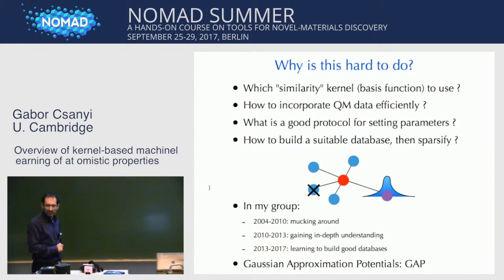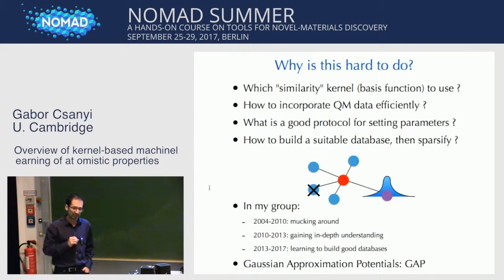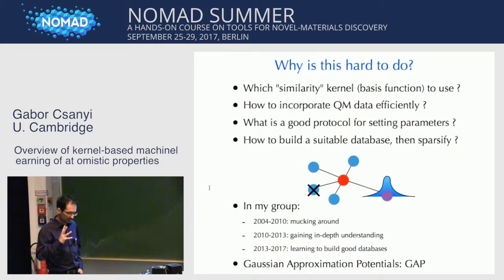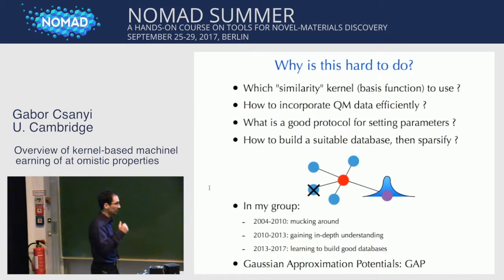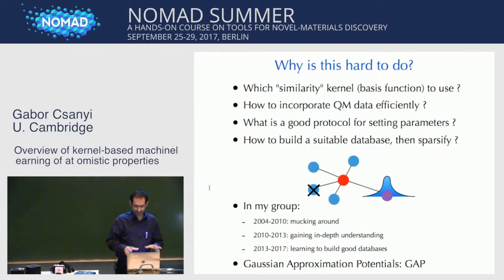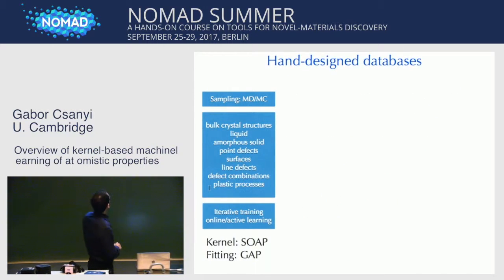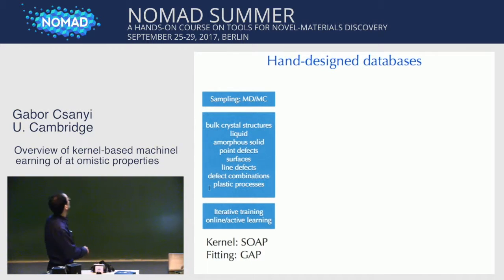The system that I use, that we introduced, is called Gaussian Approximation Potential. The Gaussian here refers to the probabilistic interpretation of Gaussian process regression — the methodology from the previous slide — and that's what we use to build materials models. Anatol is going to talk a lot about molecules, so I just want to show you a couple of brief examples of how well we can learn quantum mechanics.